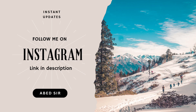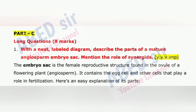First important long question is Part C Long questions, 8 marks. Question 1: With a neat labelled diagram, describe the parts of a mature angiosperm embryo sac and mention the role of synergids. The embryo sac is the female reproductive structure found in the ovule of a flowering plant, angiosperm. It contains the egg cell and other cells that play a role in fertilization.